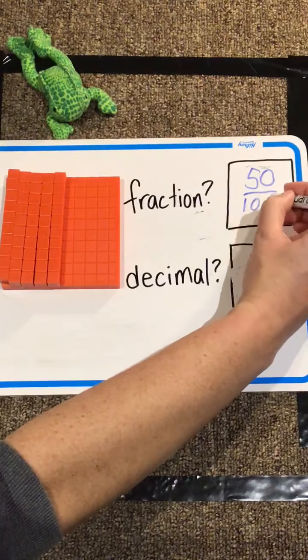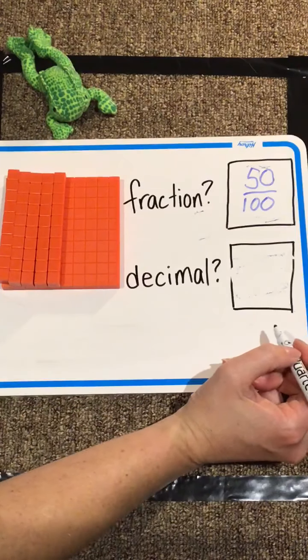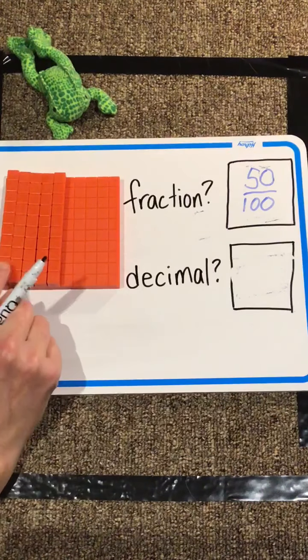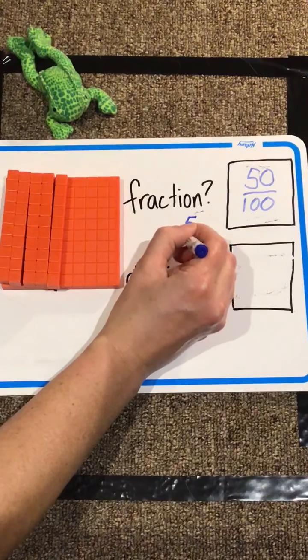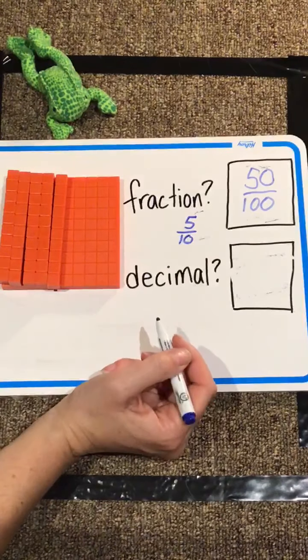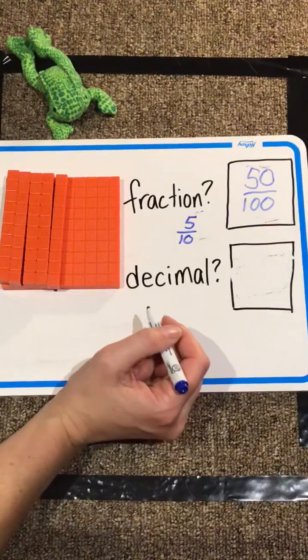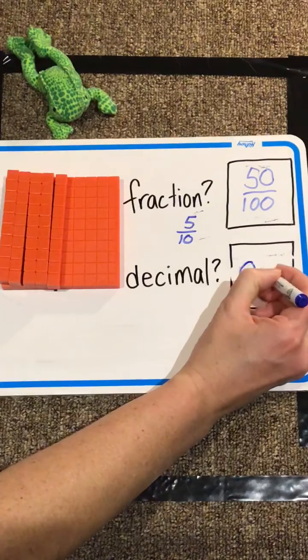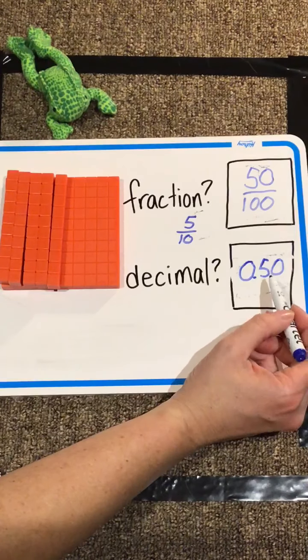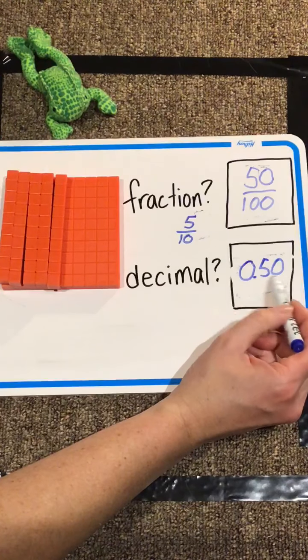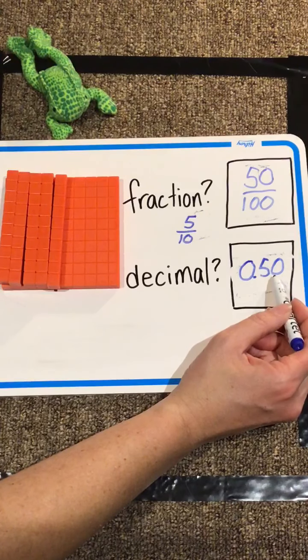Still out of my one-hundred pieces of cake that are covered. And we also know, one, two, three, four, five, we've got five out of the ten sticks that we would need to cover our whole cake. So the decimal, we've got five tenths and zero left over, or we could say fifty hundredths.